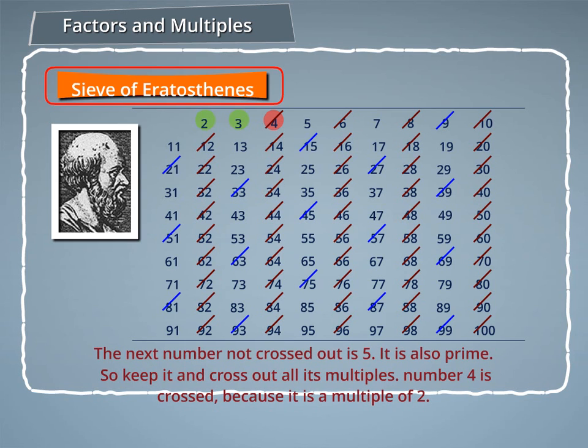Step 4: The next number not crossed out is 5. It is also prime, so keep it and cross out all its multiples. Number 4 is crossed because it is a multiple of 2.